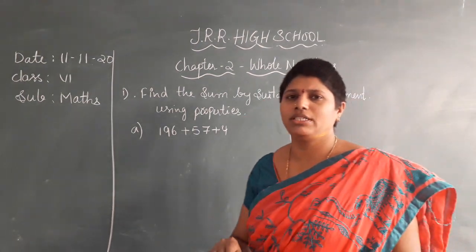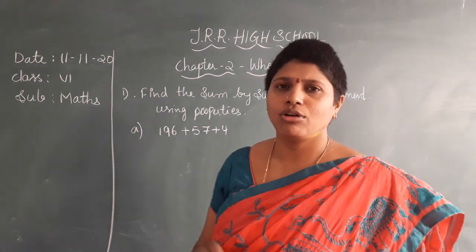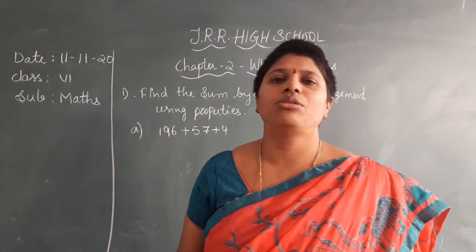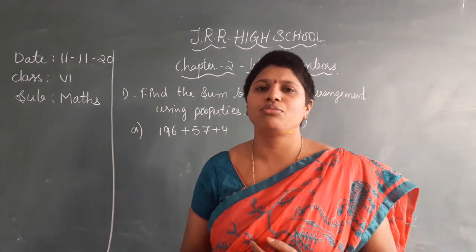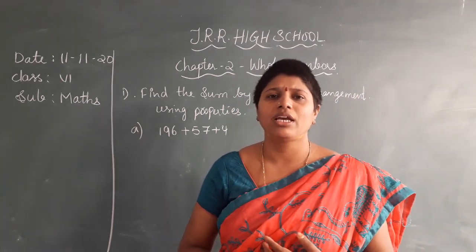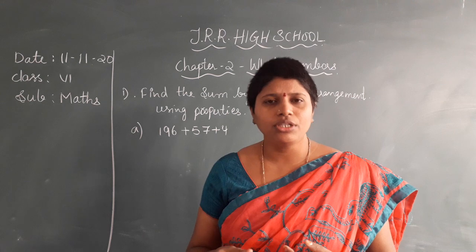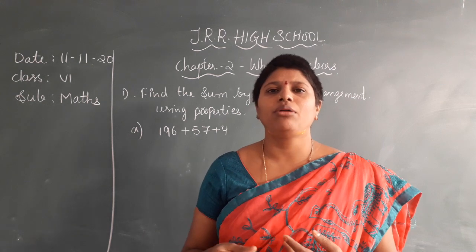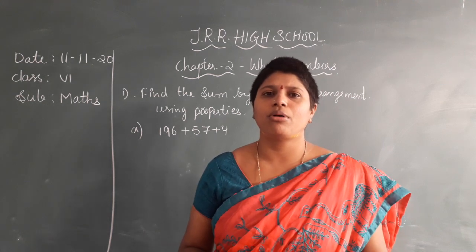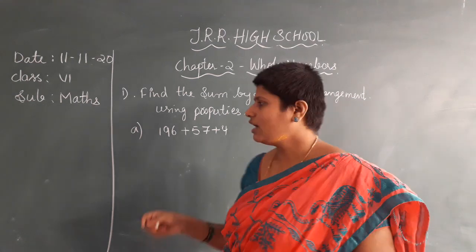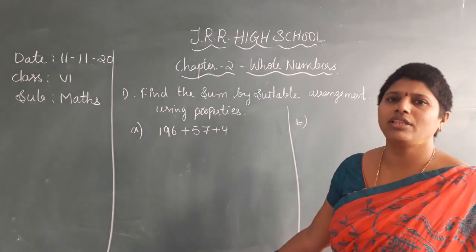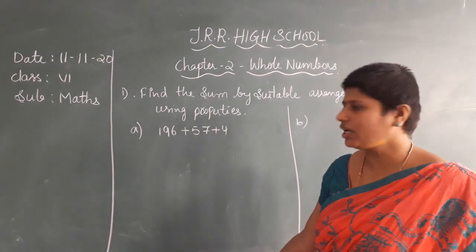We have learnt the properties: closure property, commutative, associative, distributive property. Now using your commutative, associative, and distributive property we have some problems. How to simplify them, we will see.